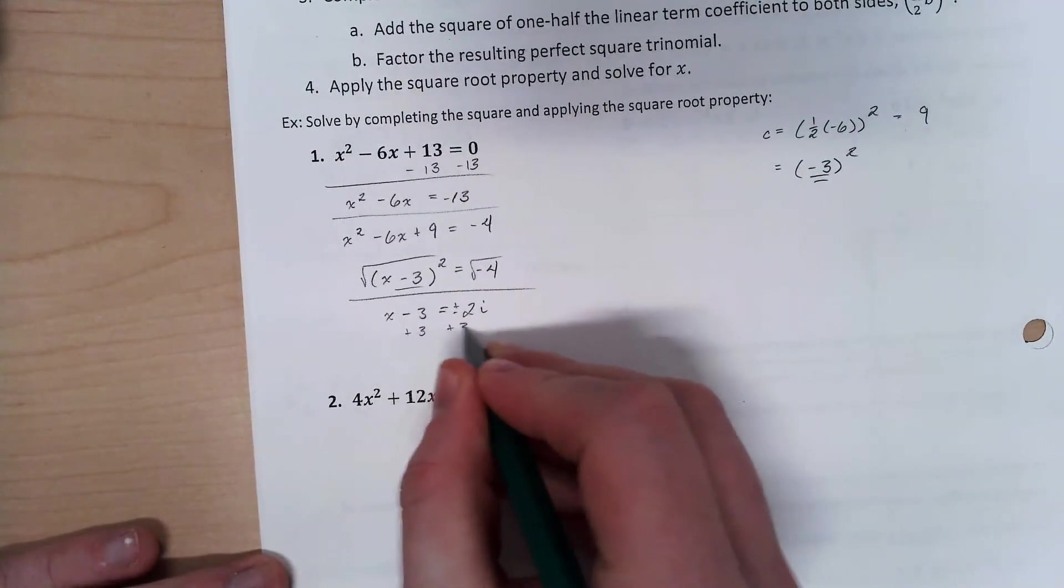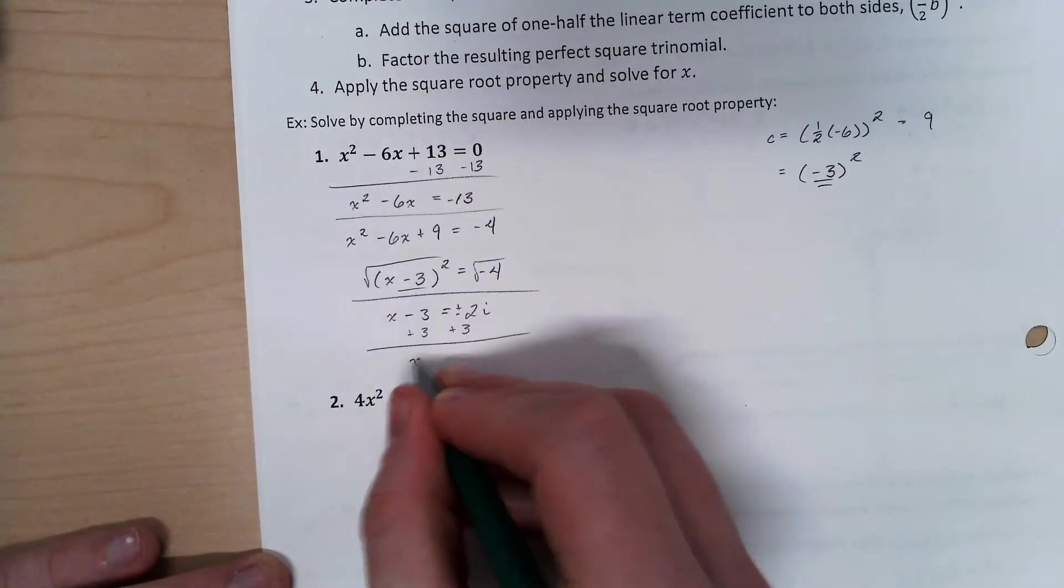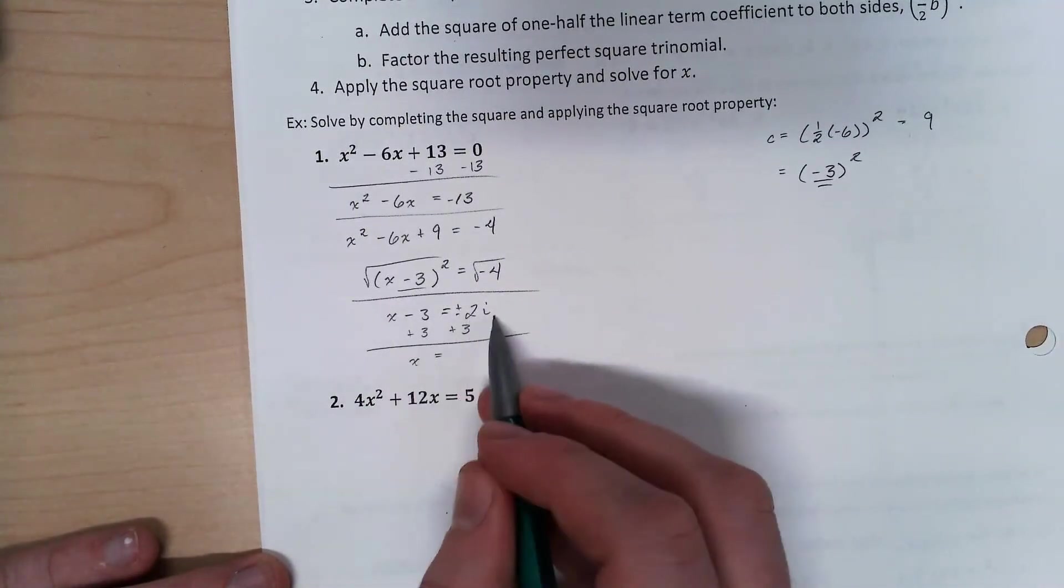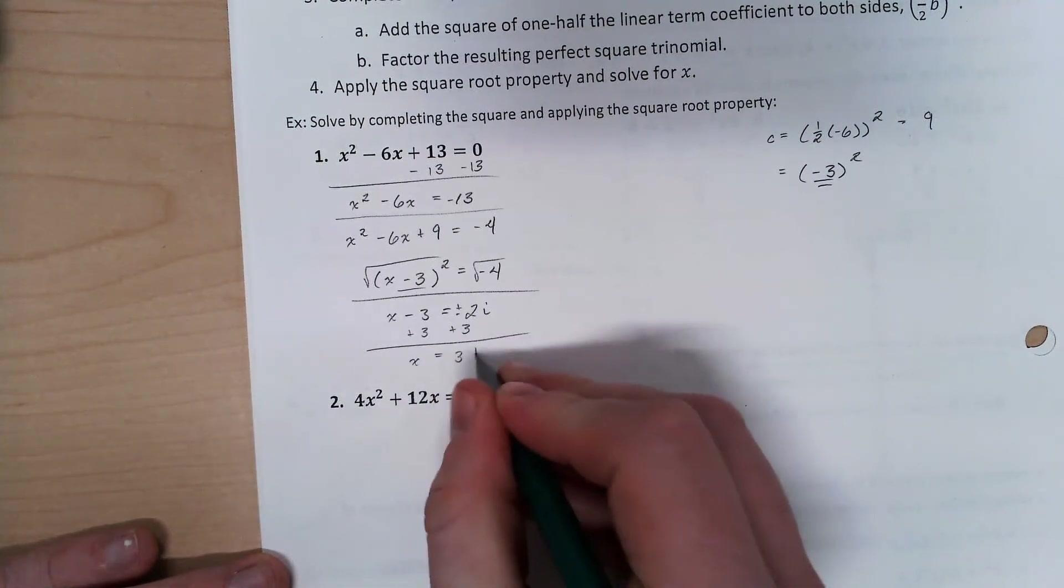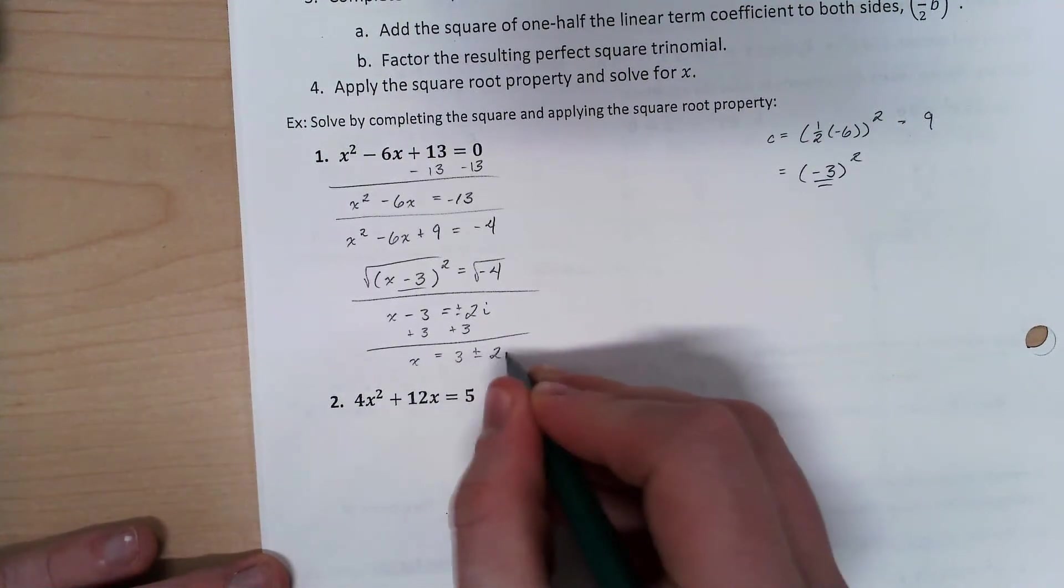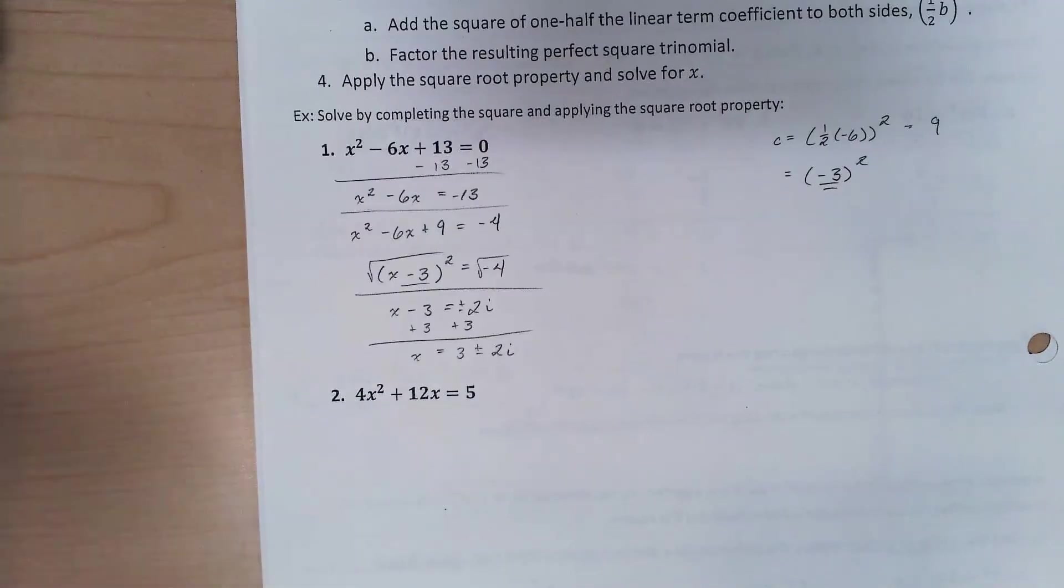So now I'm going to add my 3 over. And this 2i is not a like term with 3. So we don't combine them at all. It's just going to be 3 plus or minus 2i. And those are our two solutions. 3 plus 2i is one of the solutions. 3 minus 2i is the other.